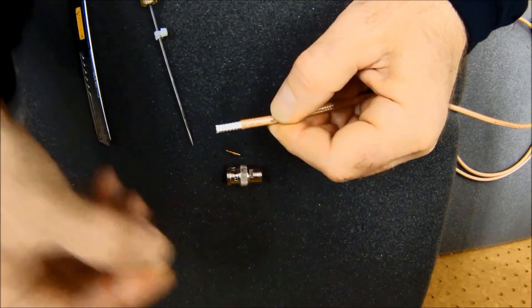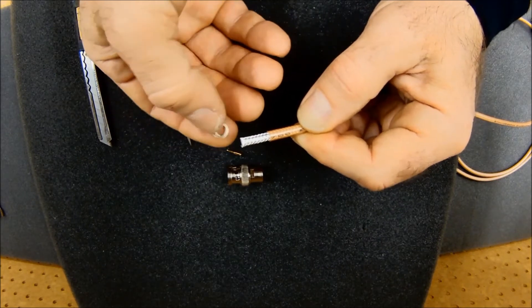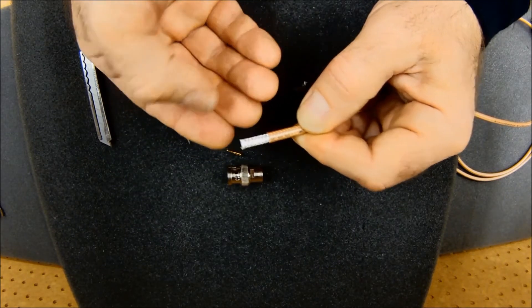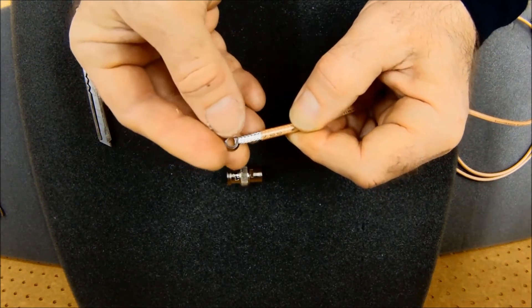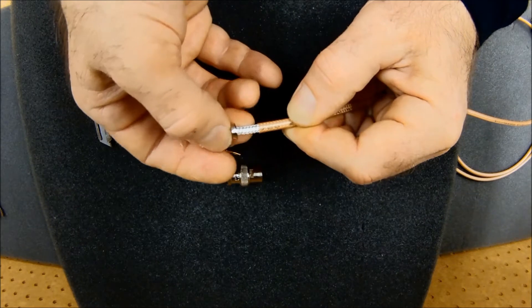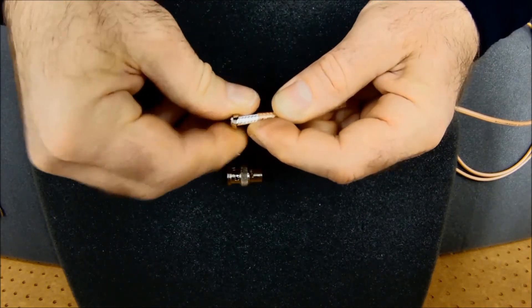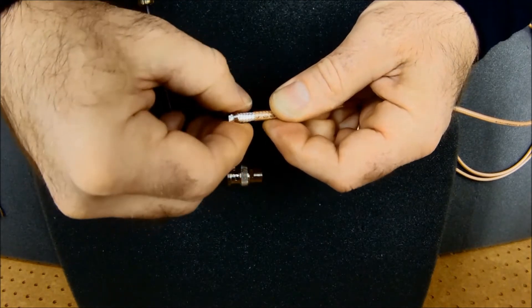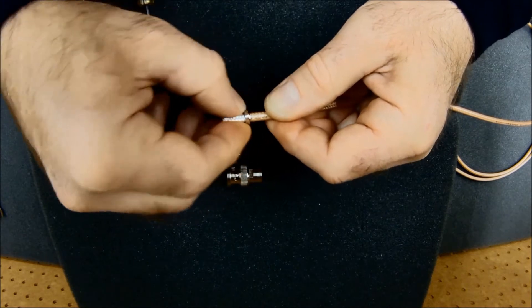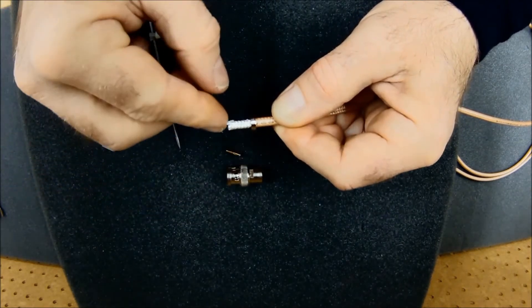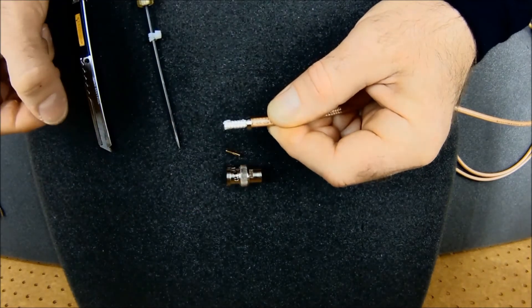At this point, I'm going to take this shoulder washer. It has a little shoulder on the inside and it's tapered, pointing in the direction that it goes into the connector. And I'm going to slide it up on my coax. I like to do this before the braid starts to get all frayed out. It's going to sit right there.